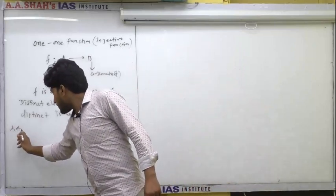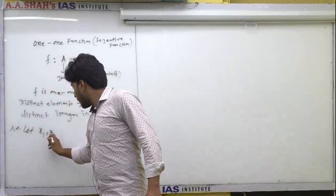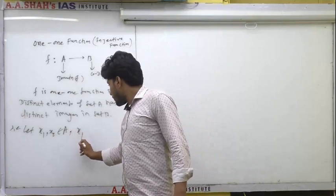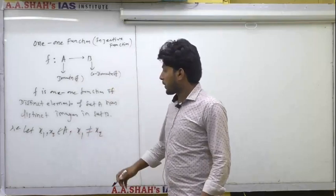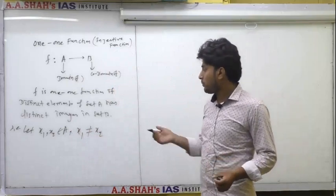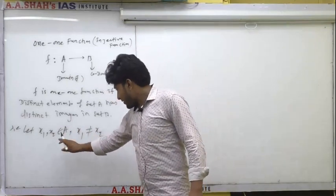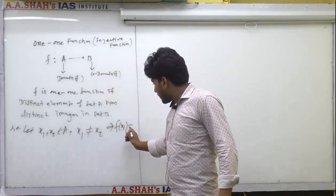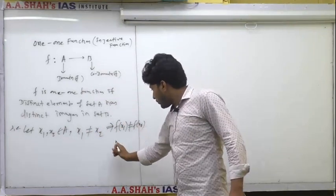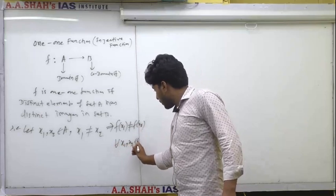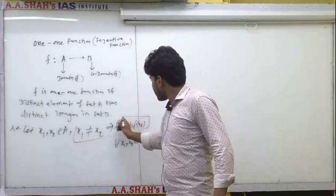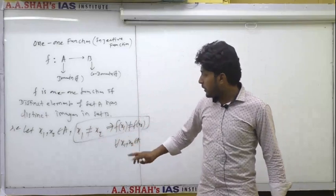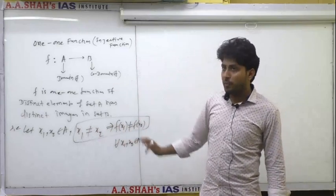In another way: let x1 and x2 be two elements in set A such that x1 is different from x2. Then f(x1) must be different from f(x2), for all x1, x2 belonging to A. So we assume x1 ≠ x2 and prove f(x1) ≠ f(x2) to call f a one-one function.